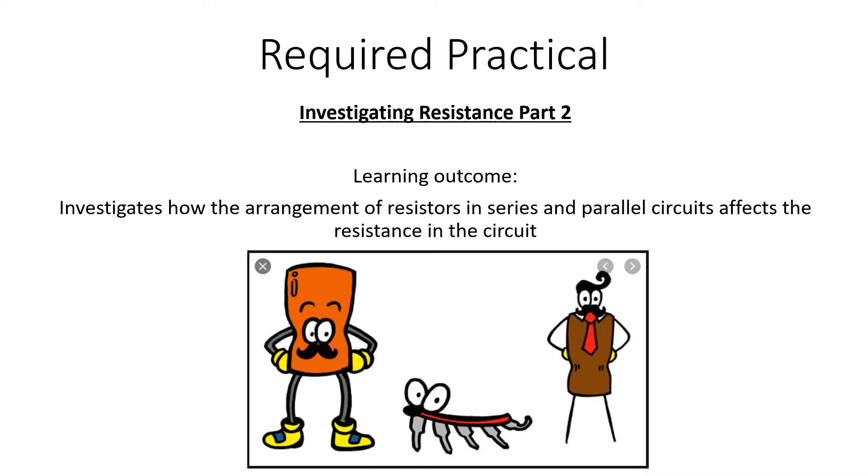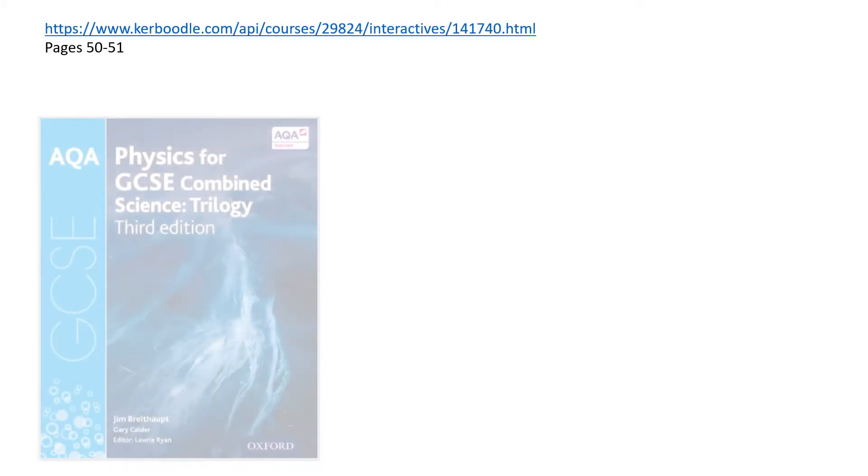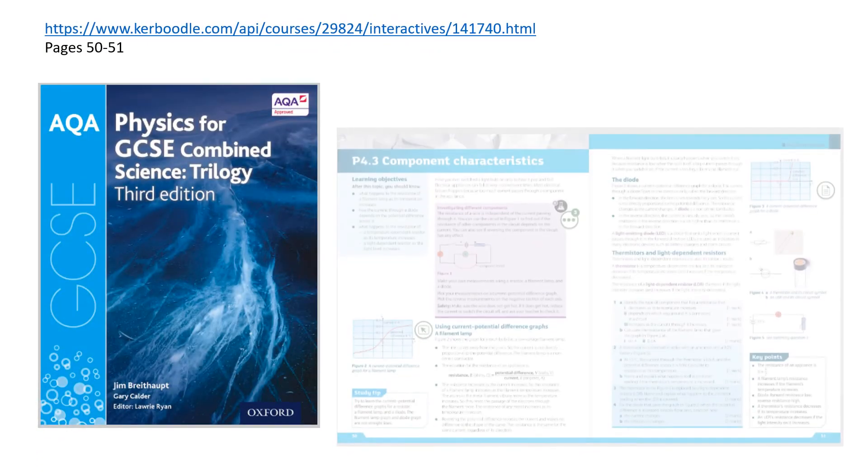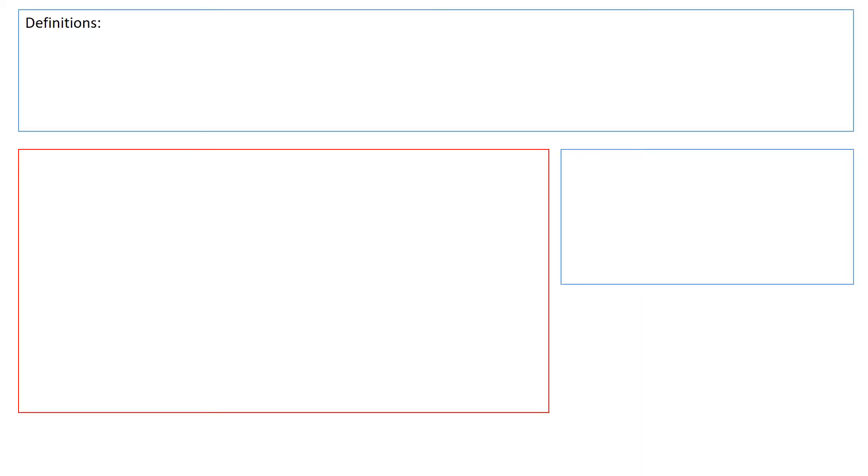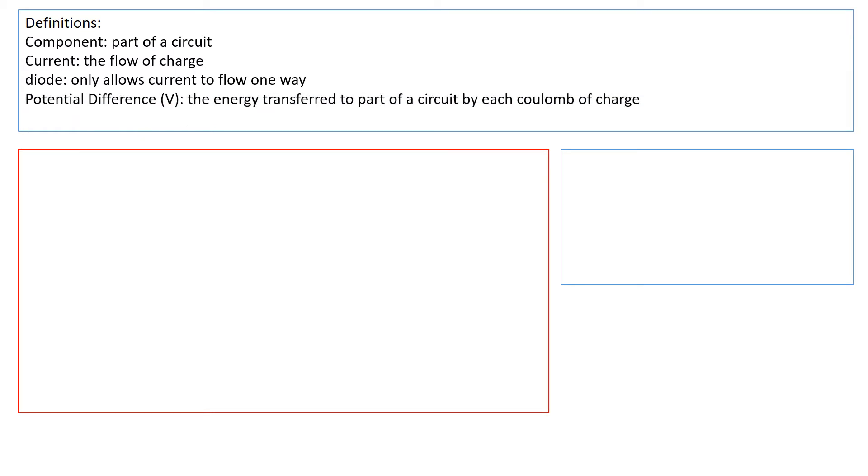Today's learning is supported through the Caboodle textbook - Component Characteristics. Here are the definitions: component is part of a circuit, current is the flow of charge, diode only allows current to flow one way, potential difference (V) is the energy transferred to part of the circuit by each coulomb of charge, and resistor limits the current in a circuit.